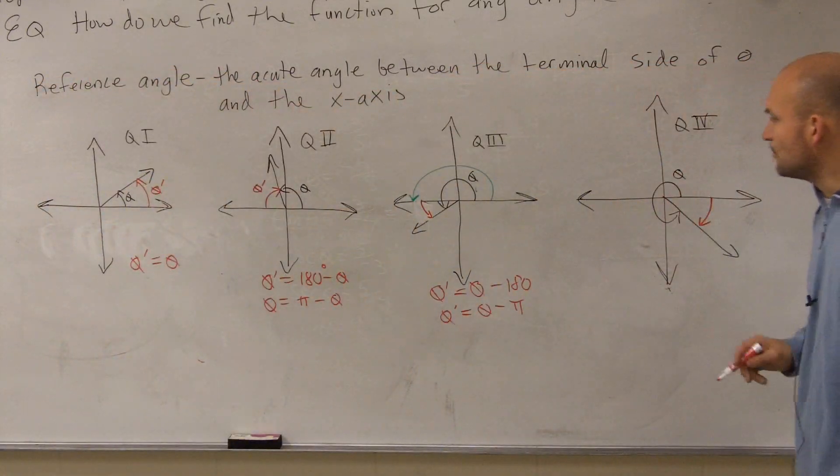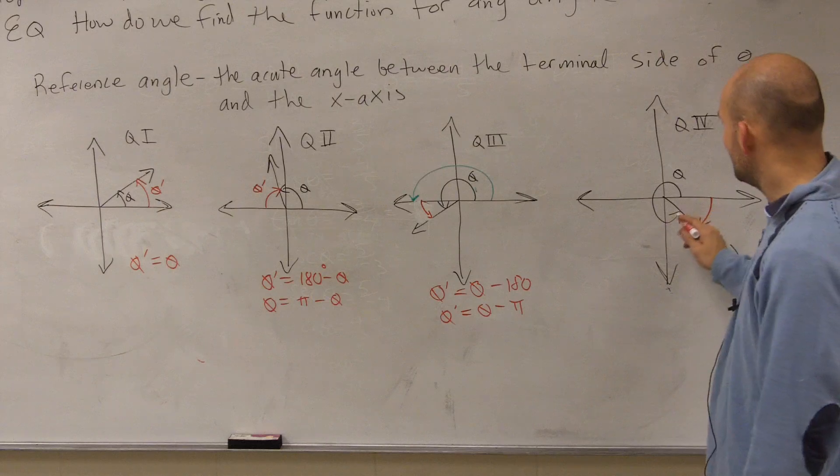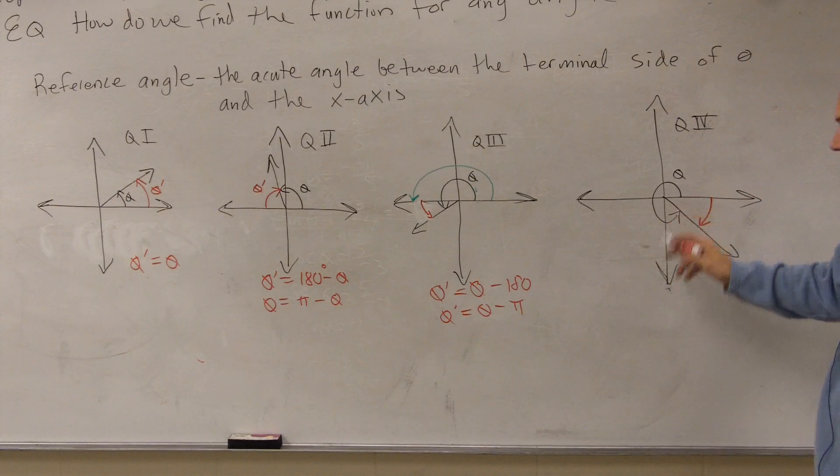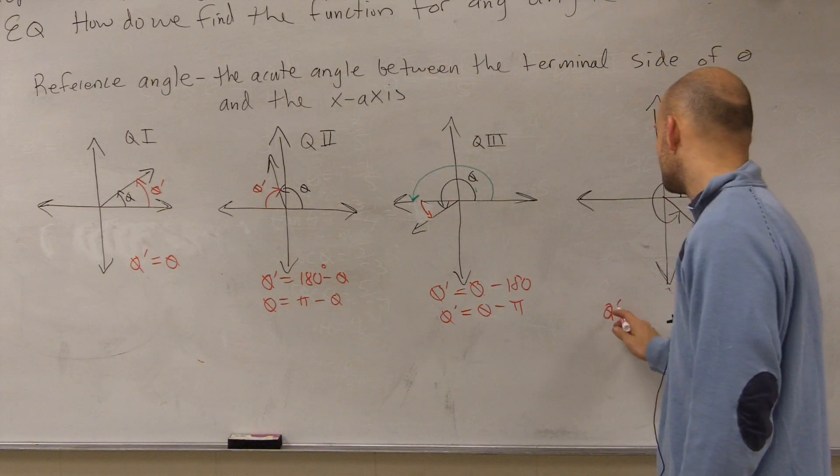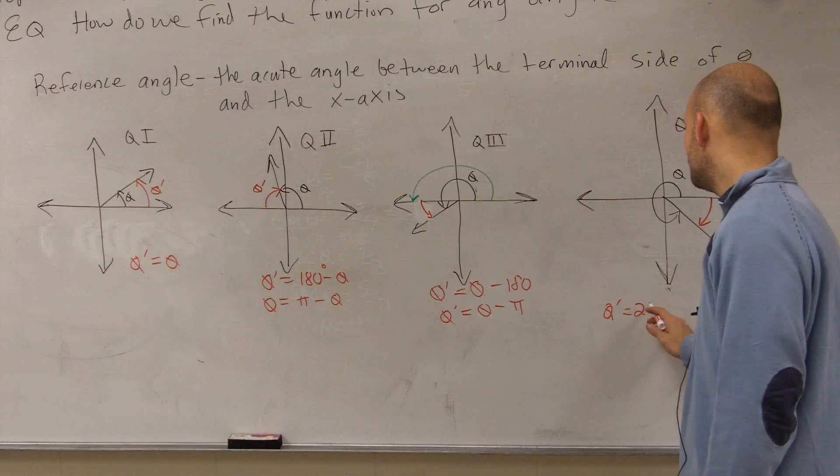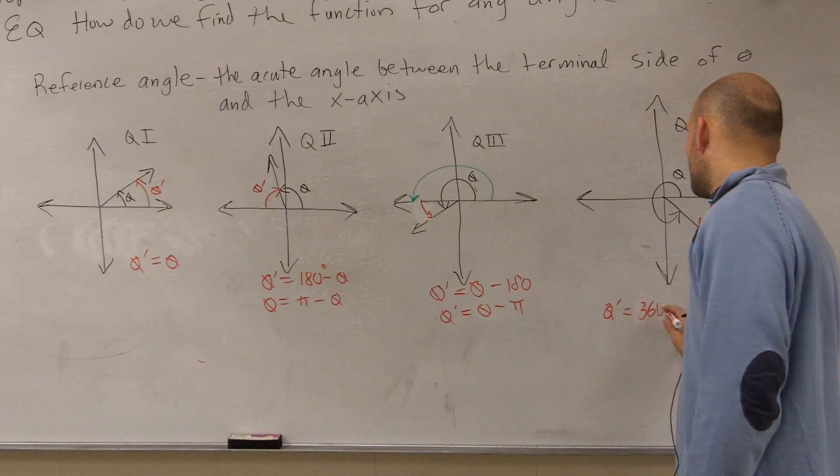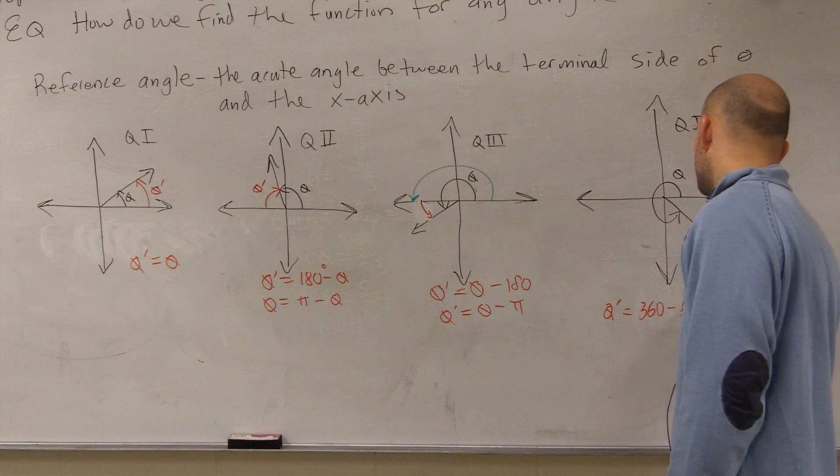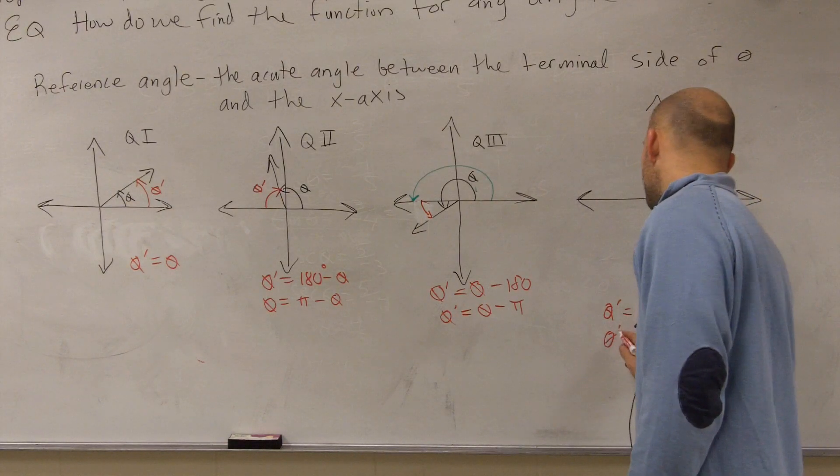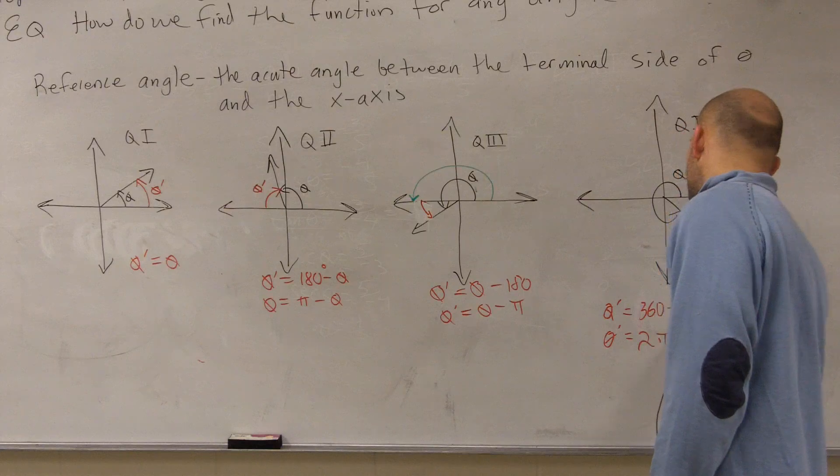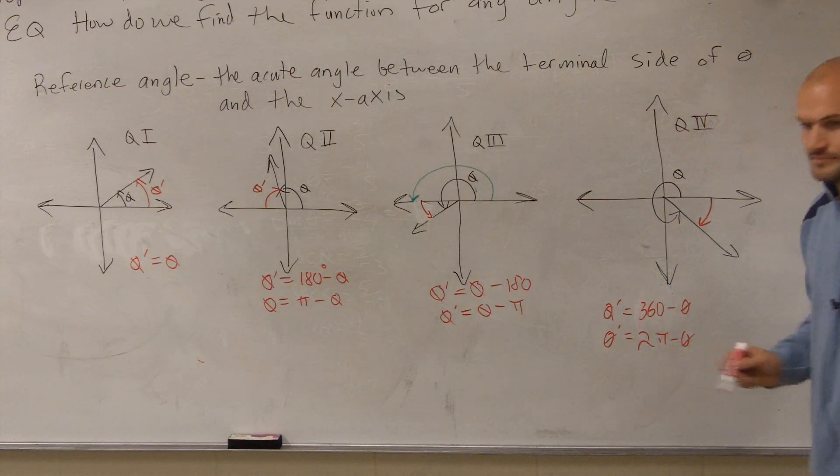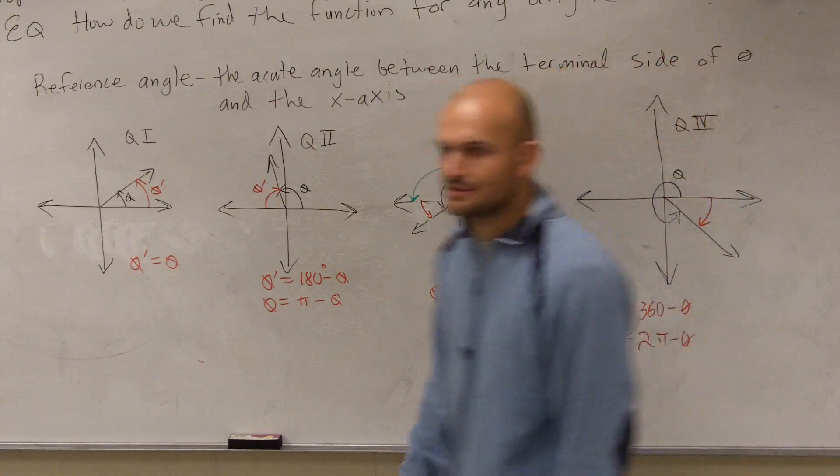All right? And then the last one for quadrant four. Again, all we're going to do now is take theta and take 360 and minus theta, or we'll take 2 pi and minus theta. Okay? And that's how you algebraically find these.